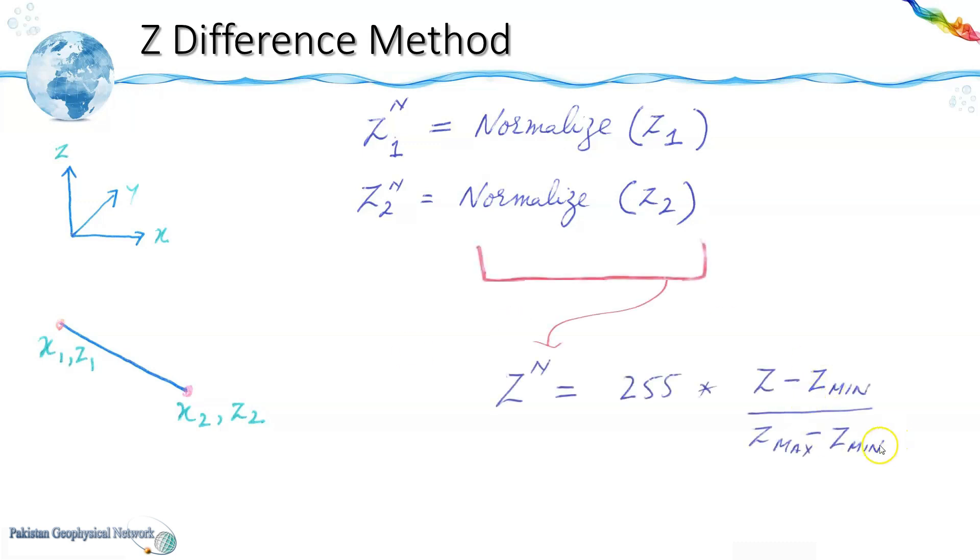We have the z minimum and z maximum values and their difference would give us the range of z values. And using this simple equation we can get the normalized values which would range from 0 to 255. And this zn would be the variable light.